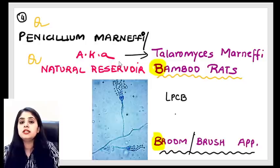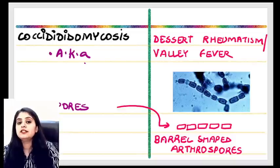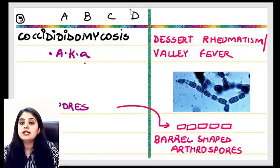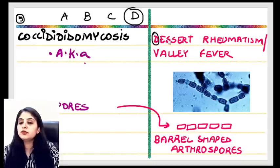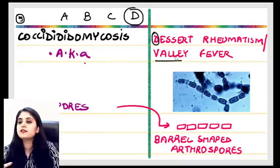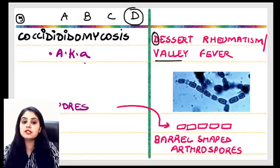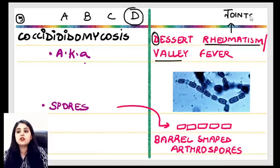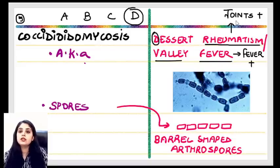Question 2: A gardener who pricked her finger in a rose garden develops a local pustule forming an ulcer, with cutaneous nodules and involvement of local lymphatic drainage. Answer: Sporothrix schenckii / Sporotrichosis — rose garden history plus lymphocutaneous spread is classic.